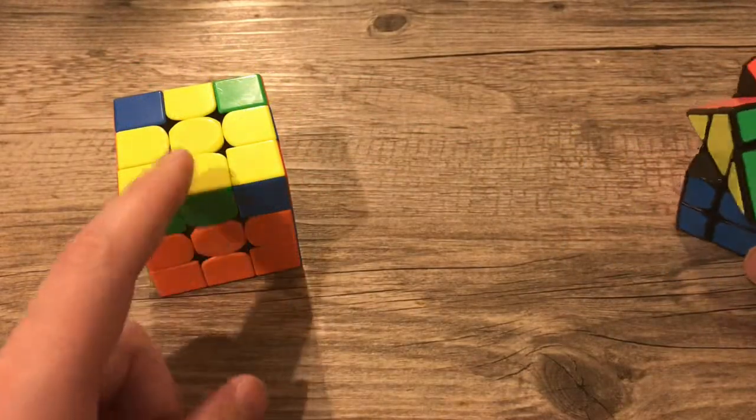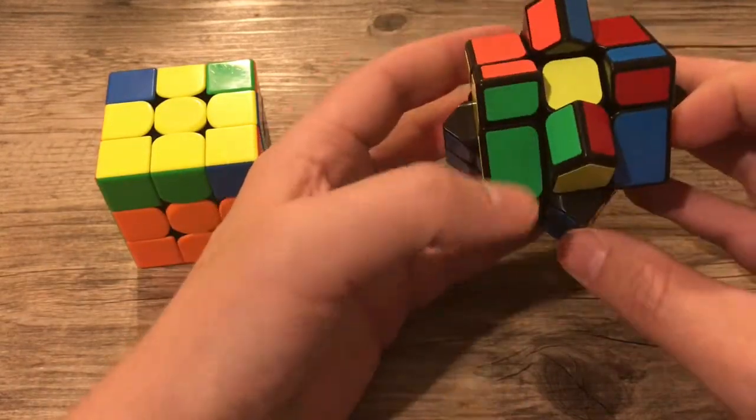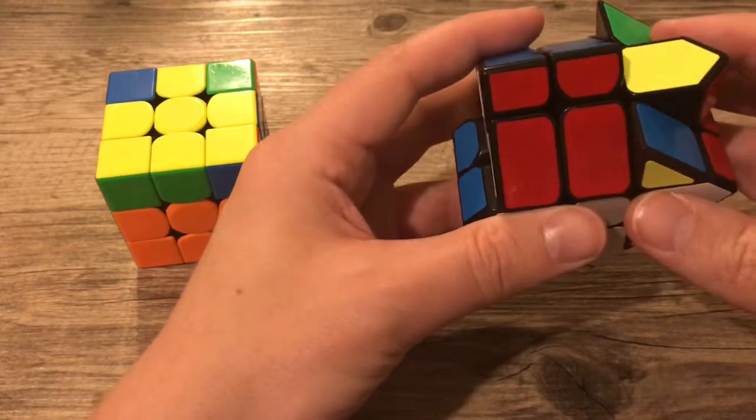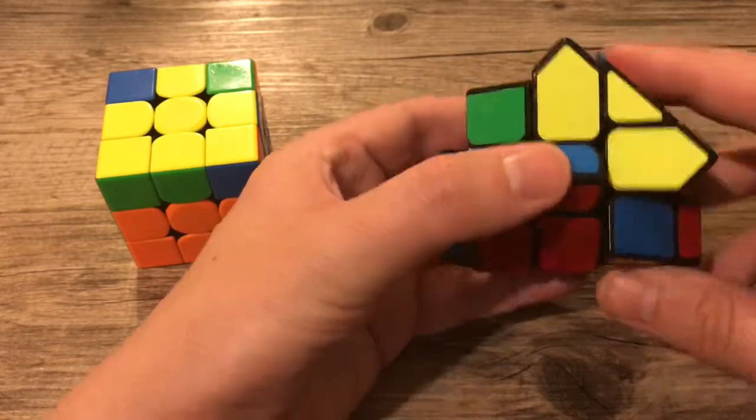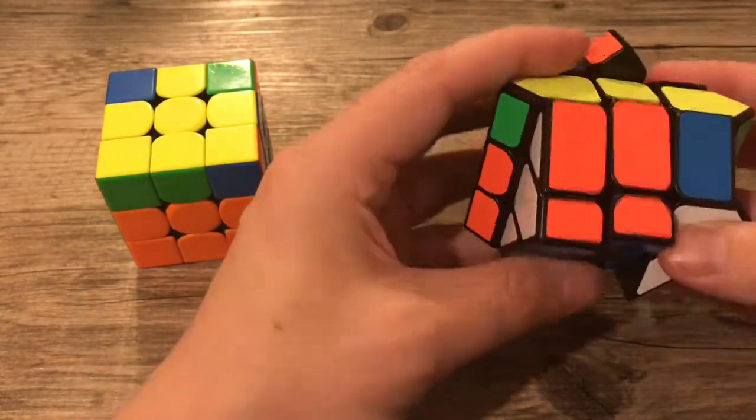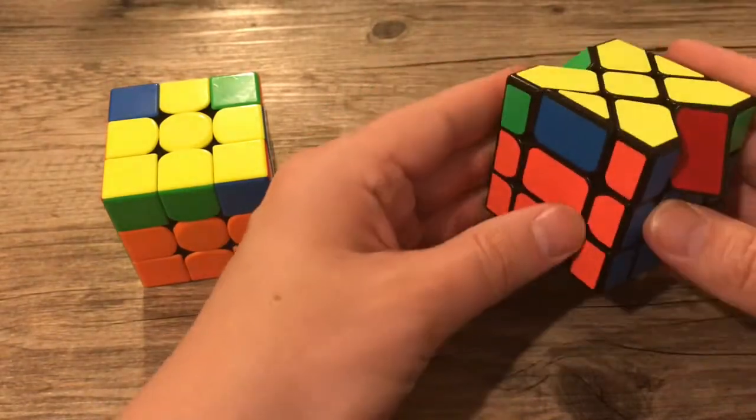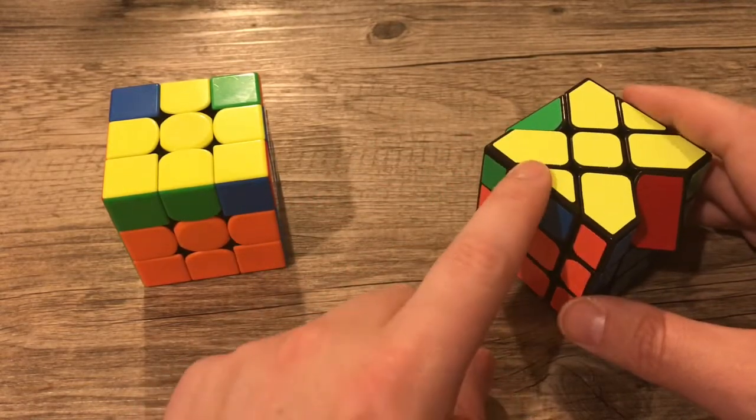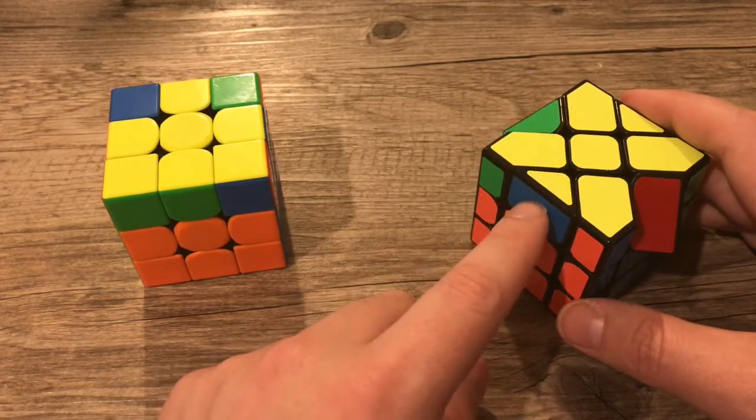The next thing we're going to try to do is get a yellow cross on top just like we would in beginner's method. So notice we have a single dot. So you can do your method of doing this like you would on a 3x3, however you'd like to do it, and you'll have your cross on top. But there is one thing that might happen when you get to this phase. A lot of people are calling it parity, but it is not parity. Let me explain.